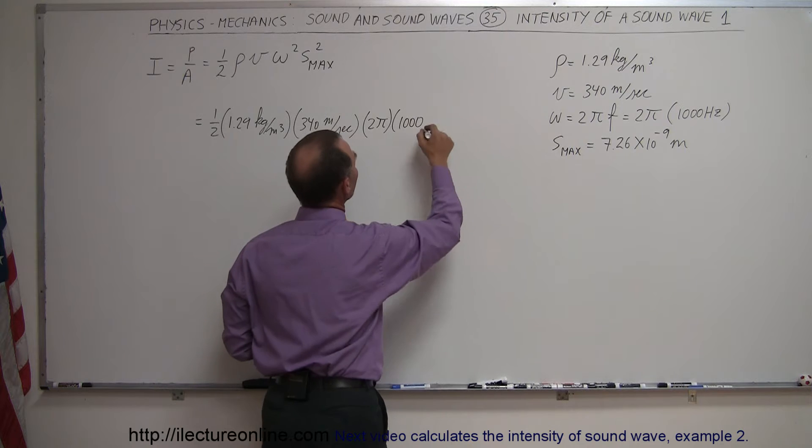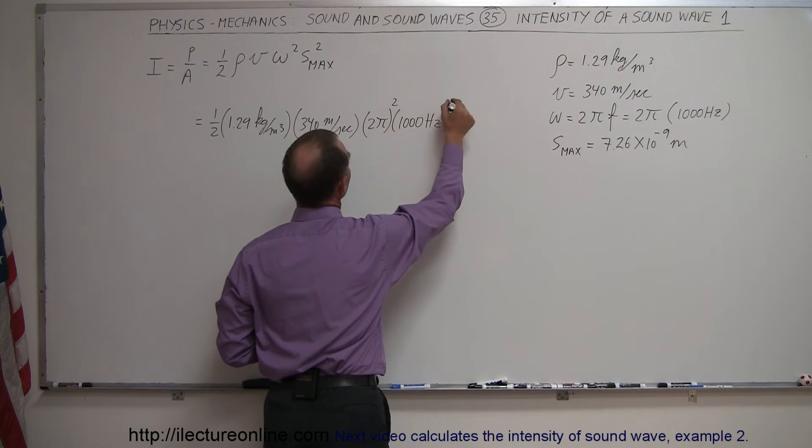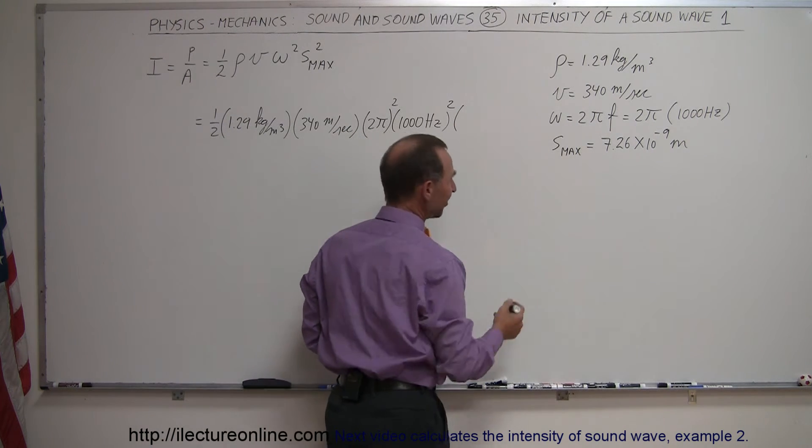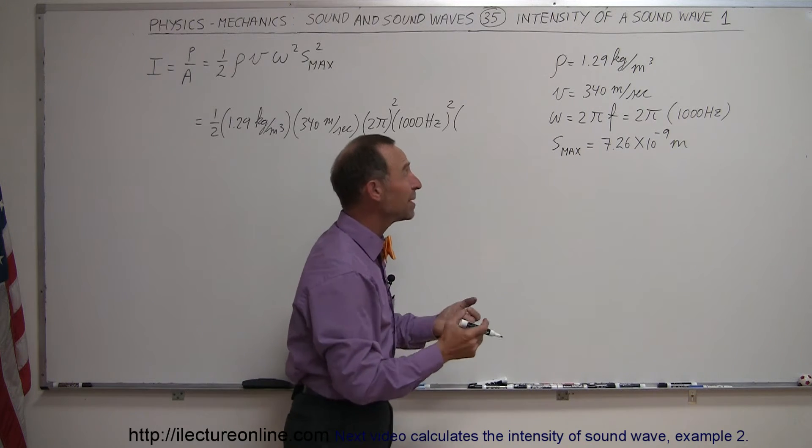which is the actual oscillatory frequency, and then multiply—oh we have to square that. And then we take the maximum displacement. Let's say that was the result of the previous video, 7.26 times 10 to the minus 9 meters, or 7.26 nanometers.